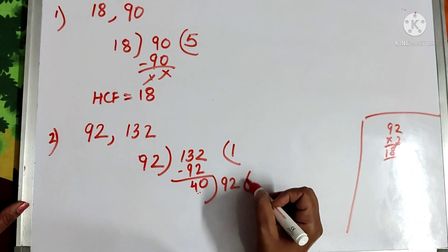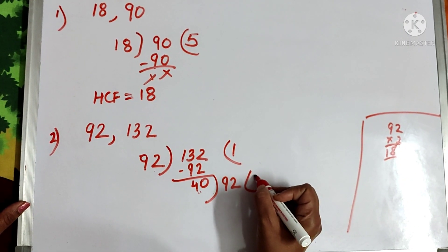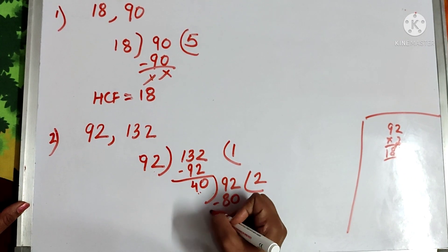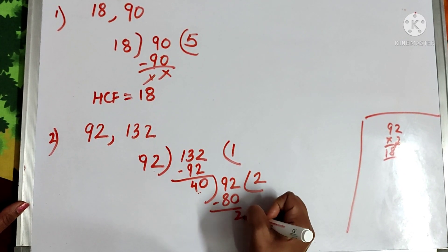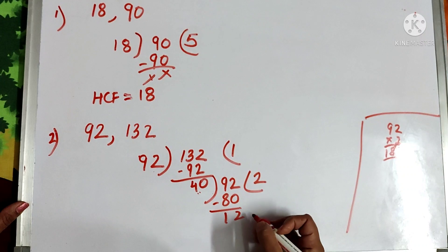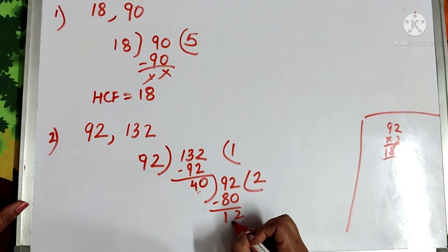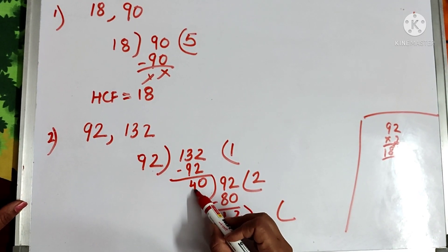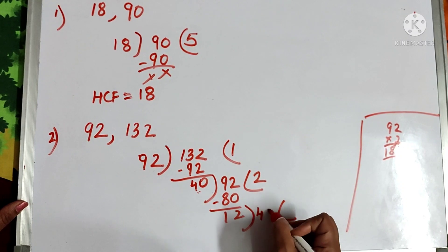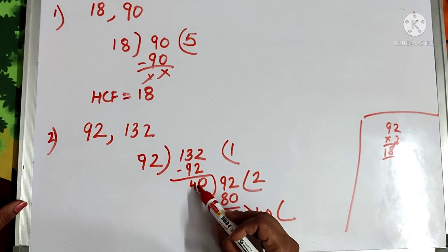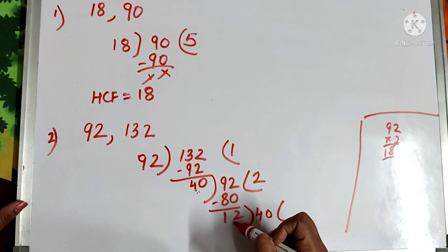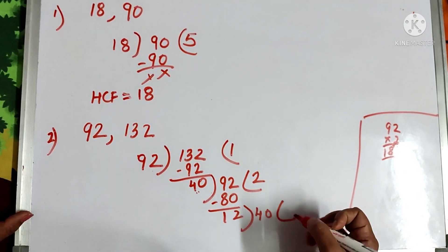Now we divide 92 by 40. 40 ones are 40, 40 twos are 80, 40 threes are 120 — so it goes by 2, giving 80. The remainder is: 92 minus 80 gives 12. So the remainder is 12. Now this remainder, 12, becomes the divisor and the last divisor, 40, becomes the dividend.